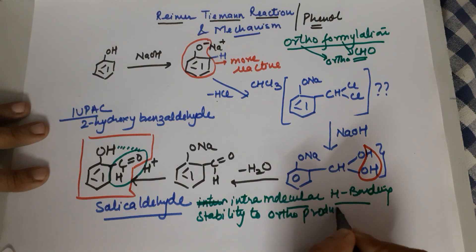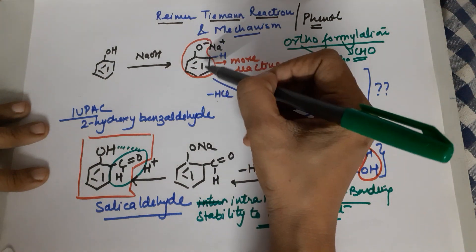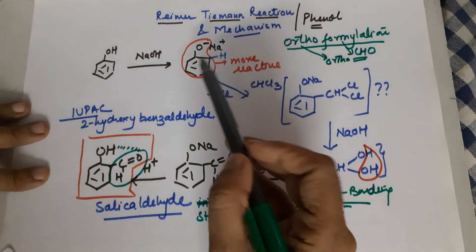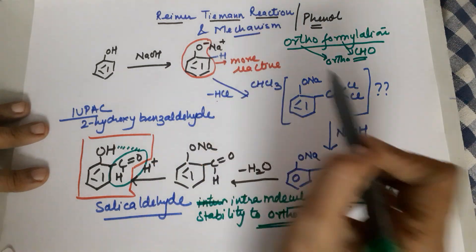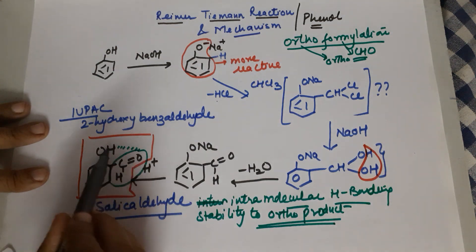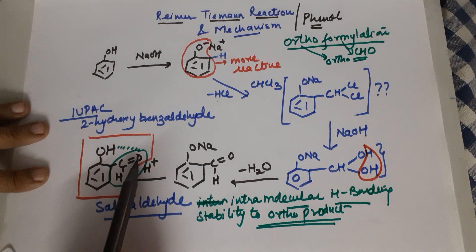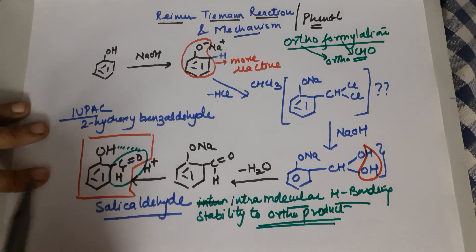So we do get only ortho product despite the fact that phenoxide is an ortho para directing. This is an activating group. It should be ortho para directing but in this particular reaction we only get ortho as the major product because of the intramolecular hydrogen bonding possible between the OH and the oxygen double bond of the carbon and the lone pair here and the H. This causes this molecule to stabilize.